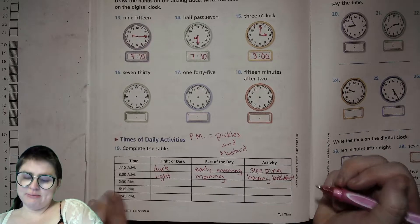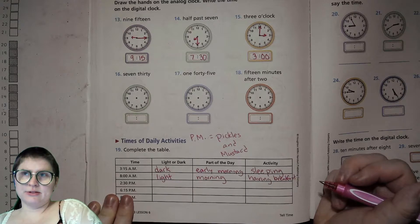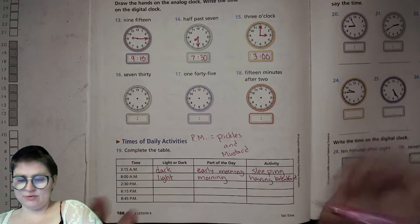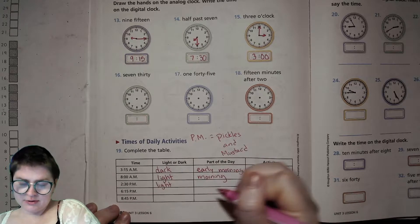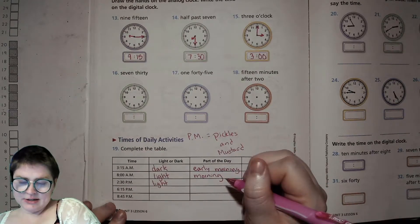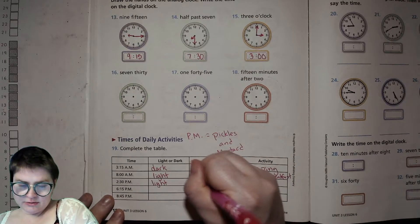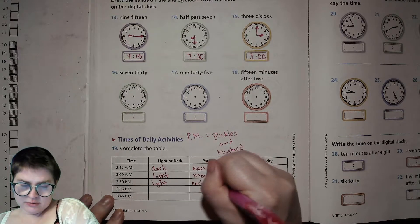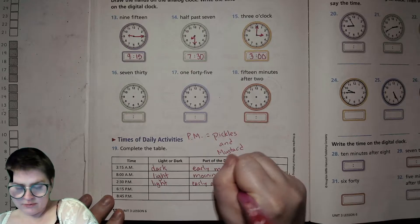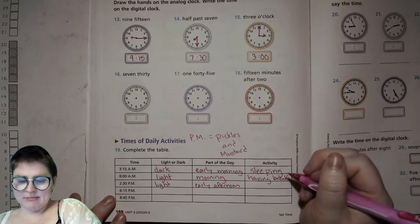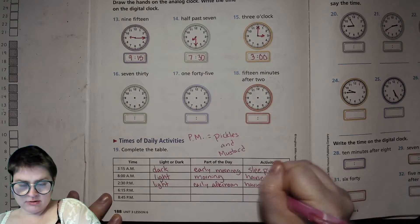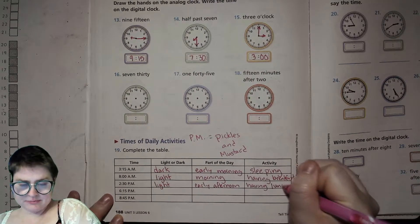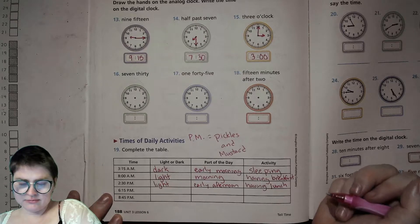2:30 PM. 2:30 pickles and mustard. That's like afternoon, right? So it'll be light out. It will be early afternoon. And an activity might be having lunch. Kind of a late lunch, but.